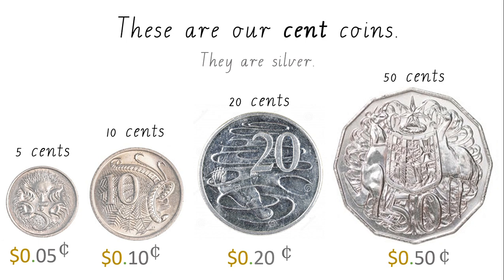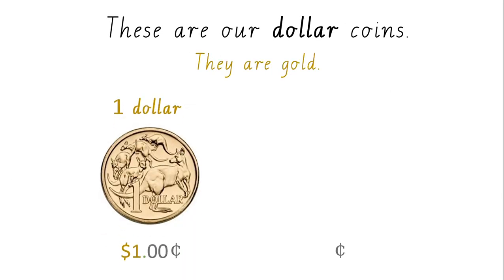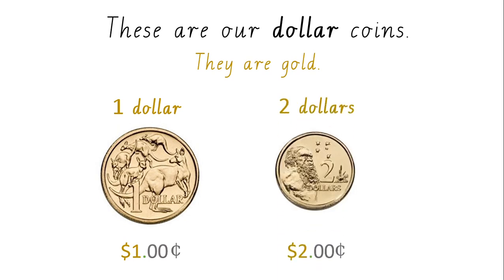We can use our cent coins to build up and make dollars. These are our dollar coins. They are gold: one dollar, two dollars.